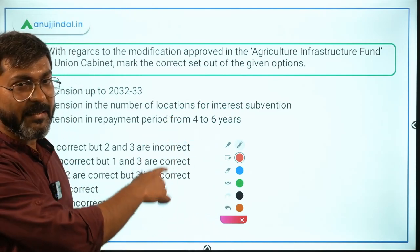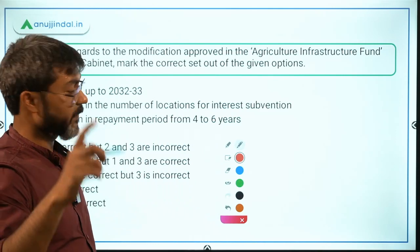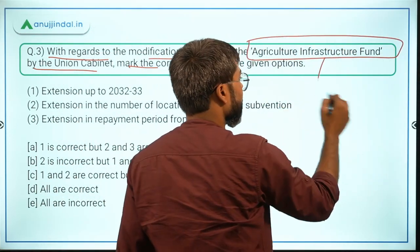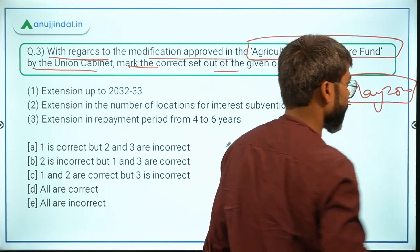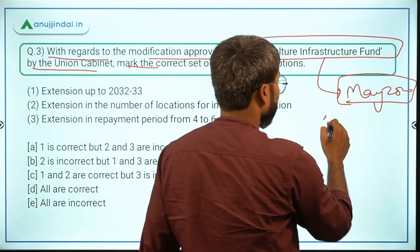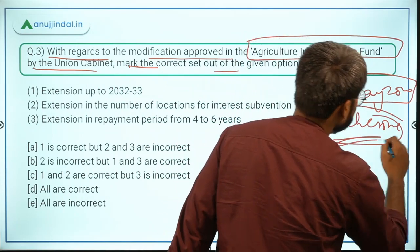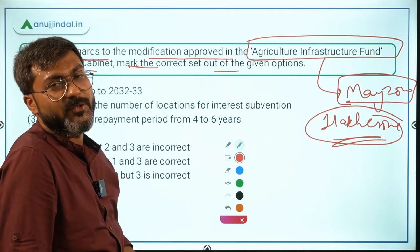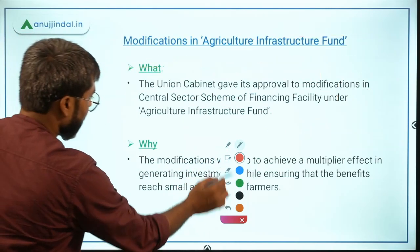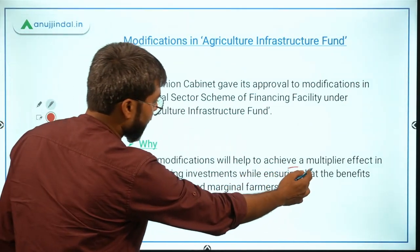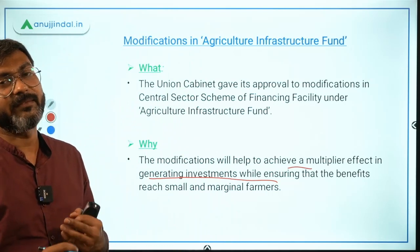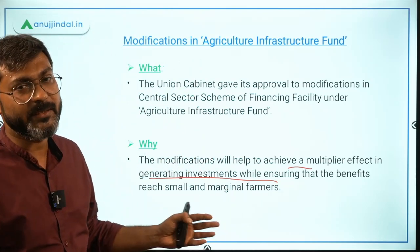Question 3 is very important, especially for NABARD. With regards to modifications approved in the Agriculture Infrastructure Fund by the Union Cabinet, mark the correct set from the given options. This fund was announced in May 2020 as part of the ₹20 lakh crore package, with a total corpus of ₹1 lakh crore. New guidelines have been provided by the Ministry of Agriculture and Farmers Welfare, headed by Narendra Singh Tomar, to boost investment in the agriculture sector.